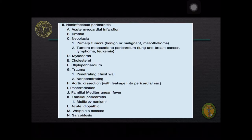Non-infectious pericarditis may be due to acute myocardial infarction, uremia, neoplasia (which includes primary and metastatic tumors to the pericardium), myxedema, elevated cholesterol, chylopericardium, trauma, aortic dissection with leakage into the pericardial sac, post-irradiation, familial Mediterranean fever, familial pericarditis, acute idiopathic pericarditis, Whipple's disease, and sarcoidosis.